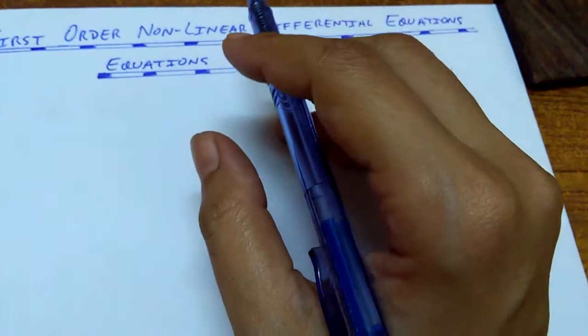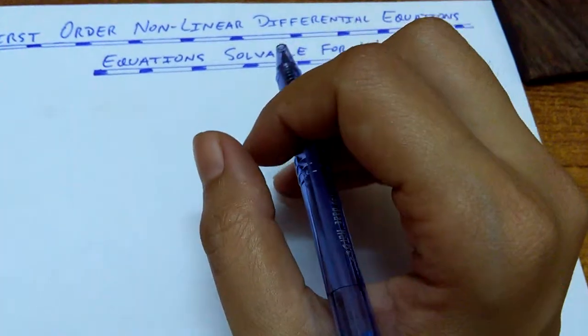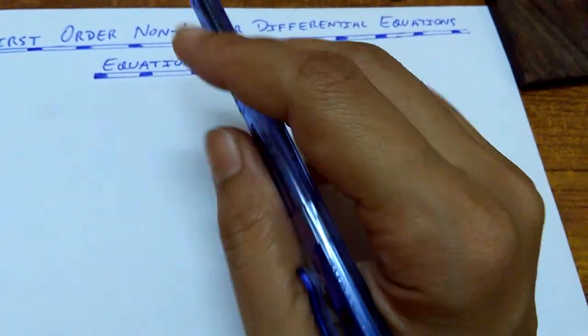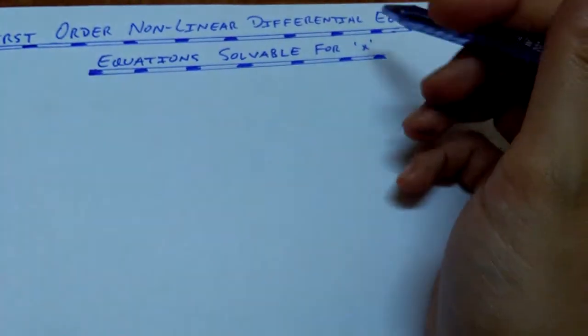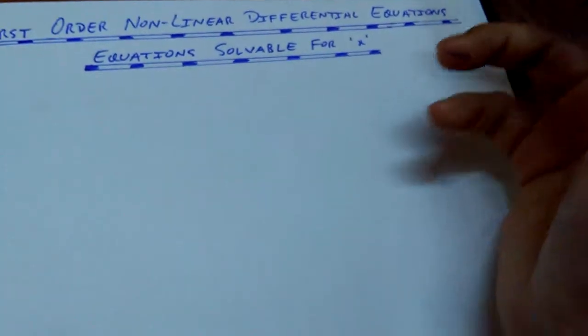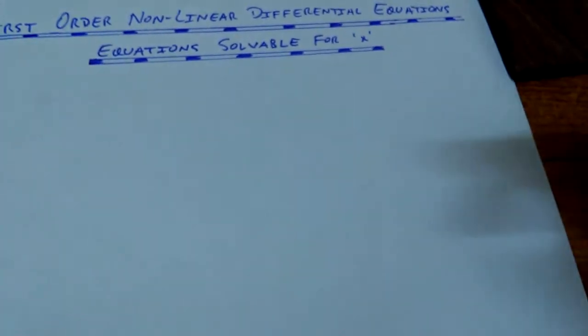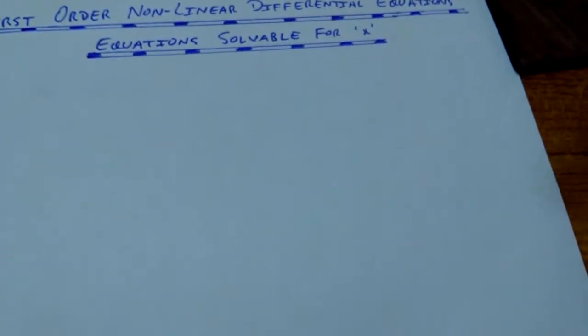What exactly it means, solvable for x, solvable for y? Such equations in which you can transform or rewrite keeping x as a subject are solvable for x. And such equations that you can rewrite keeping y as a subject, those are solvable for y.